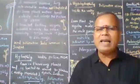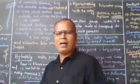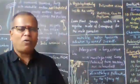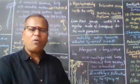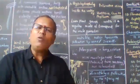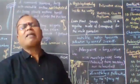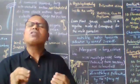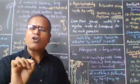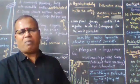The second type of hydrophily is hypohydrophily, where pollination occurs inside the water. In this case, neither the male flower nor the female flower comes to the water surface. An example of this is Zostera, also known as Ceratophyllum.